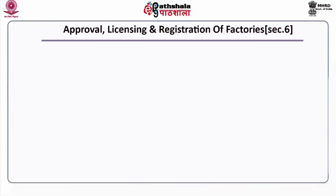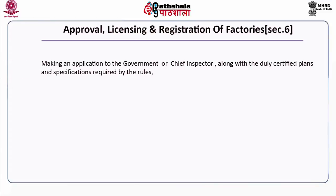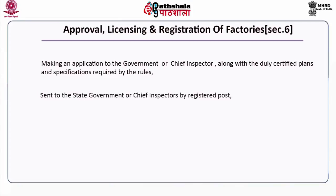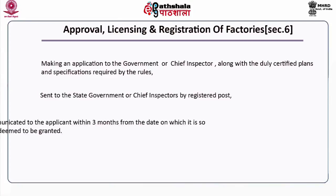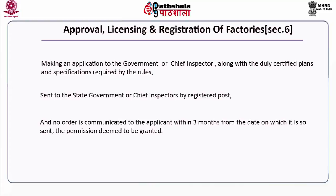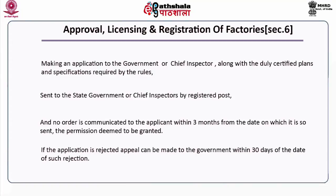Approval, licensing and registration of factories under Section 6 involves making an application to the government or chief inspector along with duly certified plans and specifications, sent by registered post. If no order is communicated to the applicant within three months from the date on which it is so sent, the permission is deemed to be granted. If the application is rejected, an appeal can be made to the government within thirty days of such rejection.